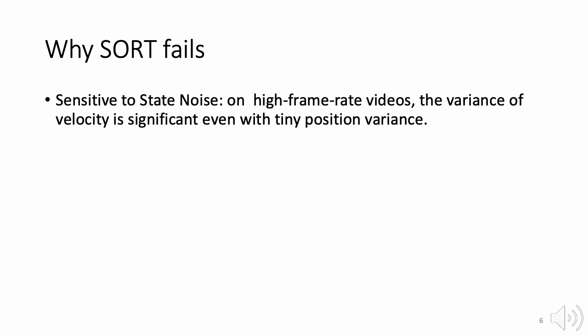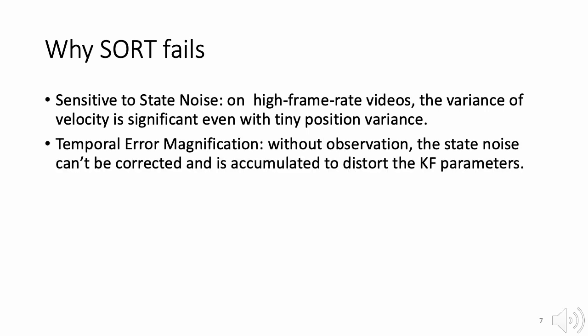So a tiny position variance can produce a significant variance to the velocity estimated from neighboring frames. Such sensitivity to state noise won't make trouble when consistent observation is provided to correct it.